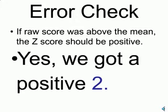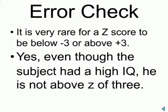Here's the error check. If the raw score was above the mean, the z-score should be positive — yes, we got a positive 2 as our z-score. Here's the other error check: it is very rare for a z-score to be below negative 3 or above positive 3. Yes, even though the subject had a high IQ, he is not above a z-score of 3.